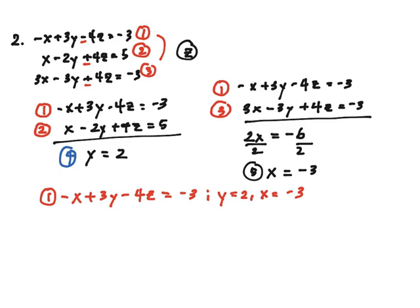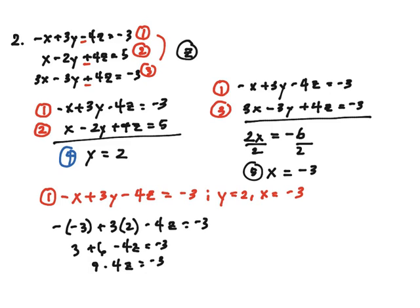So I have negative negative 3 plus 3 times 2 minus 4z equals negative 3. So I have 3 plus 6 minus 4z equals negative 3. So I have 9 minus 4z equals negative 3. Let's go ahead and subtract 9 from both sides, so I have negative 4z equals negative 12. Divide both sides by negative 4, so z equals 3.